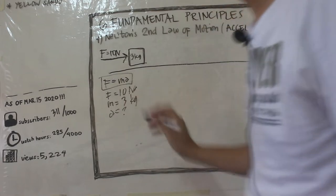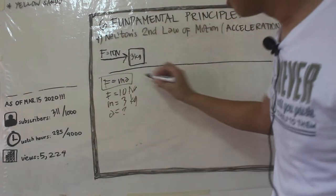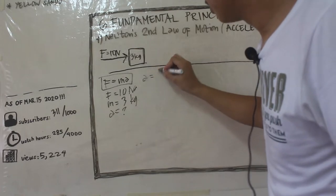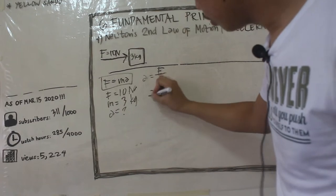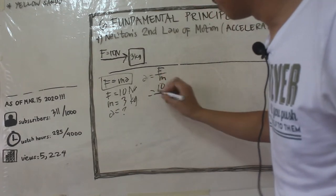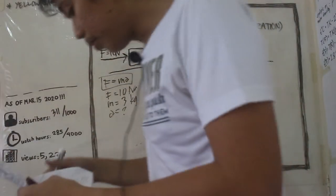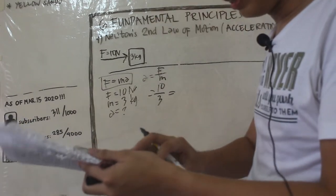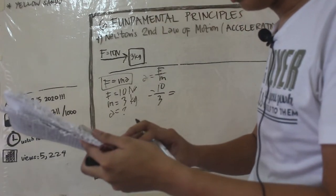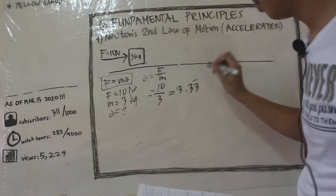Ire-rearrange natin yung formula: acceleration is equal to F over M, where F is equal to 10 and M is equal to 3. Makakakuha tayo ng value na 3.33 repeating.